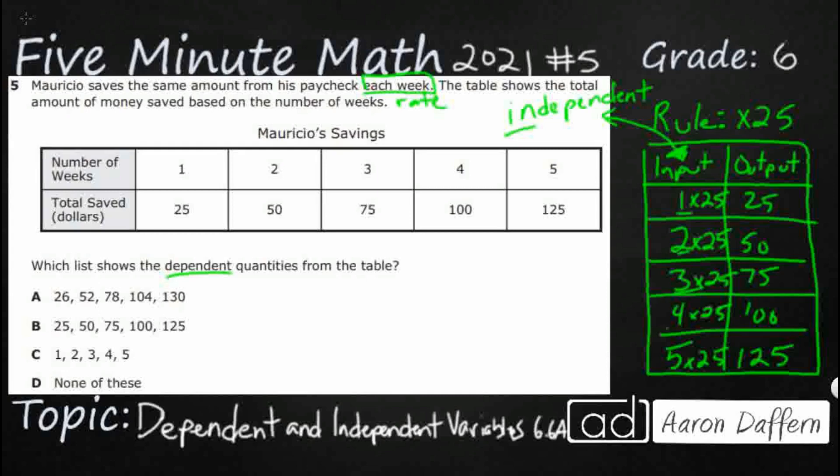Your dependent variables always depend on something happening to them. In this case, they're going to get multiplied by twenty-five. So, the dependent variables are your output. So, if we look at this as an input-output table, then it finally gives us the answer. Our dependent variables are going to be these variables right here, the amount of money that he saved in dollars: twenty-five, fifty, seventy-five, one hundred, one twenty-five. So, that is going to give us this answer right here, B.